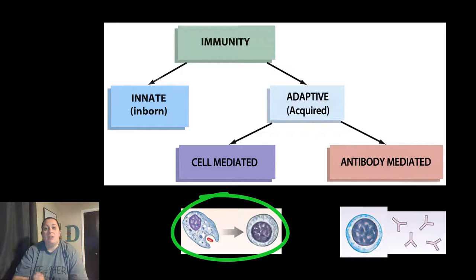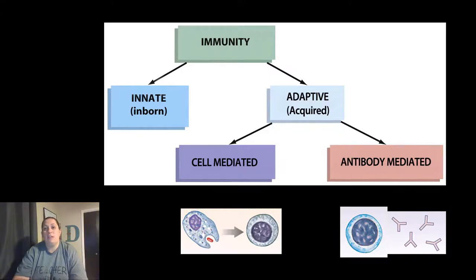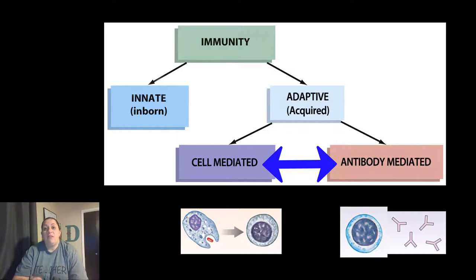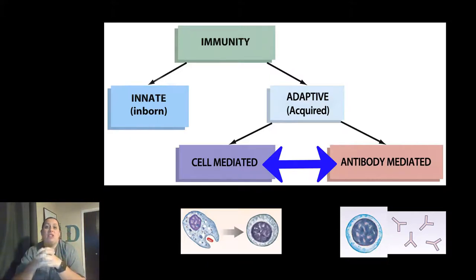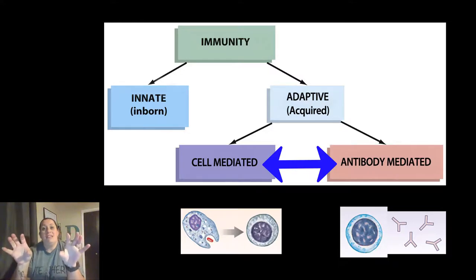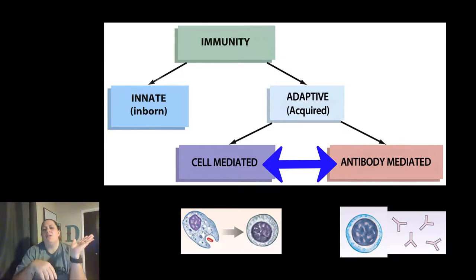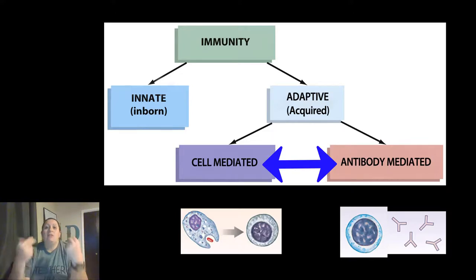We also see helper T cells. Helper T cells connect the two branches of adaptive immunity — they're the link of communication so that T cells know what B cells are doing and vice versa. If that line of communication is destroyed, this creates a huge problem. This is actually what HIV does — HIV is a virus that affects the T helper cells and knocks out the communication, so both branches are no longer communicating. When an invader comes in, it's like the cell-mediated says 'the humoral will take care of it' and vice versa, and nothing happens, so both sides get weaker and weaker.